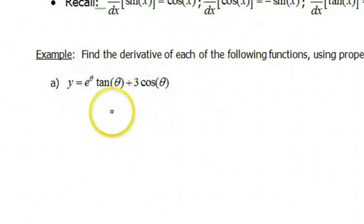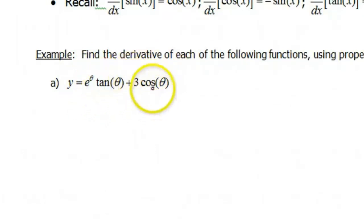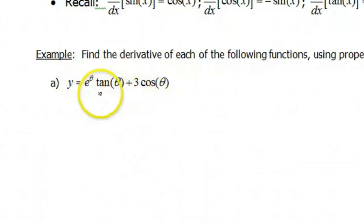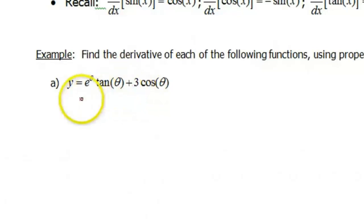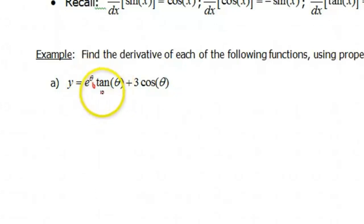But I also see an e to the theta attached to this tangent of theta, so what rules are we going to need for that? I see a 3 attached to this cosine of theta. You notice we could say this first piece is e to the theta tangent theta, or e to the theta times tangent of theta. Because there's a multiplication in there, you have to use the product rule.